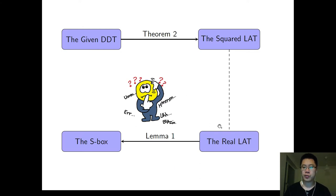The problem is how can we go from the squared LAT to the real LAT. If we solve this part, we can go from the given DDT to the S-Box. It means that we recover the secret S-Box.